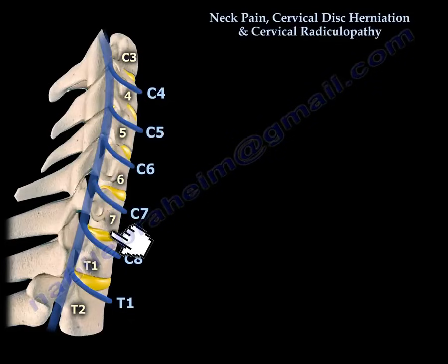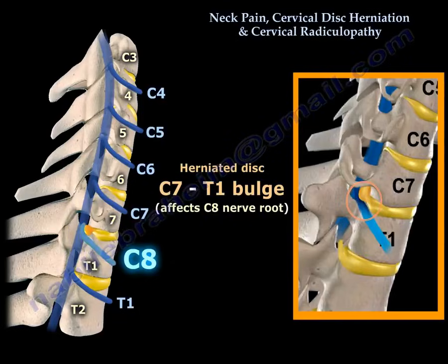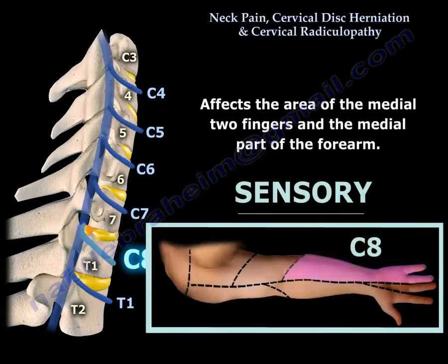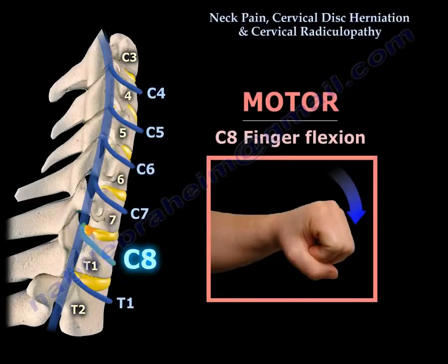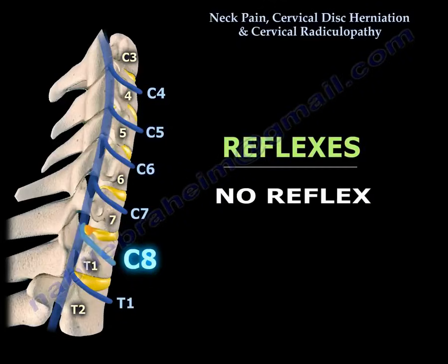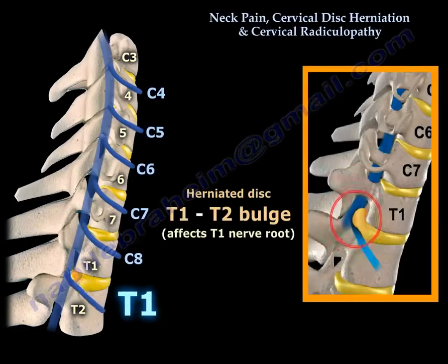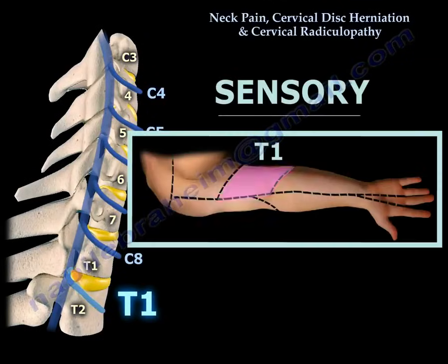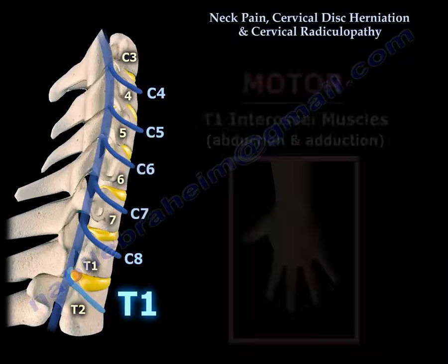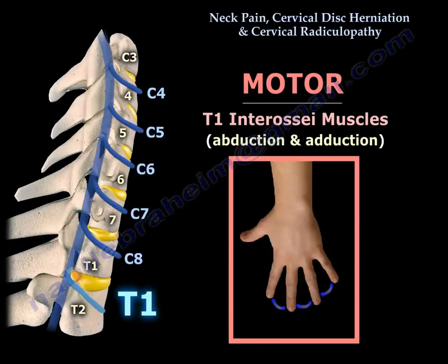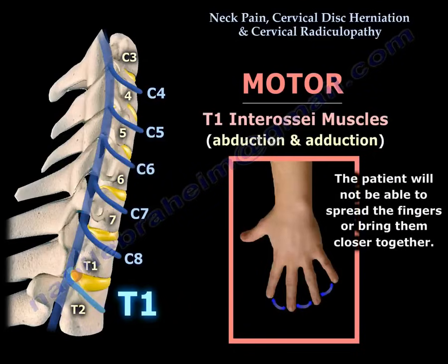Disc herniation between C7 and T1 will definitely affect the C8 nerve root. The sensory area affected will be the medial two fingers and the medial part of the forearm, as seen in the diagram. The motor power will be finger flexion. There is no reflex that can be tested for C8. Disc herniation between T1 and T2 will affect the T1 nerve root, with motor power involving the interossei muscles — abduction and adduction — so the patient will not be able to spread the fingers or bring them closer together.